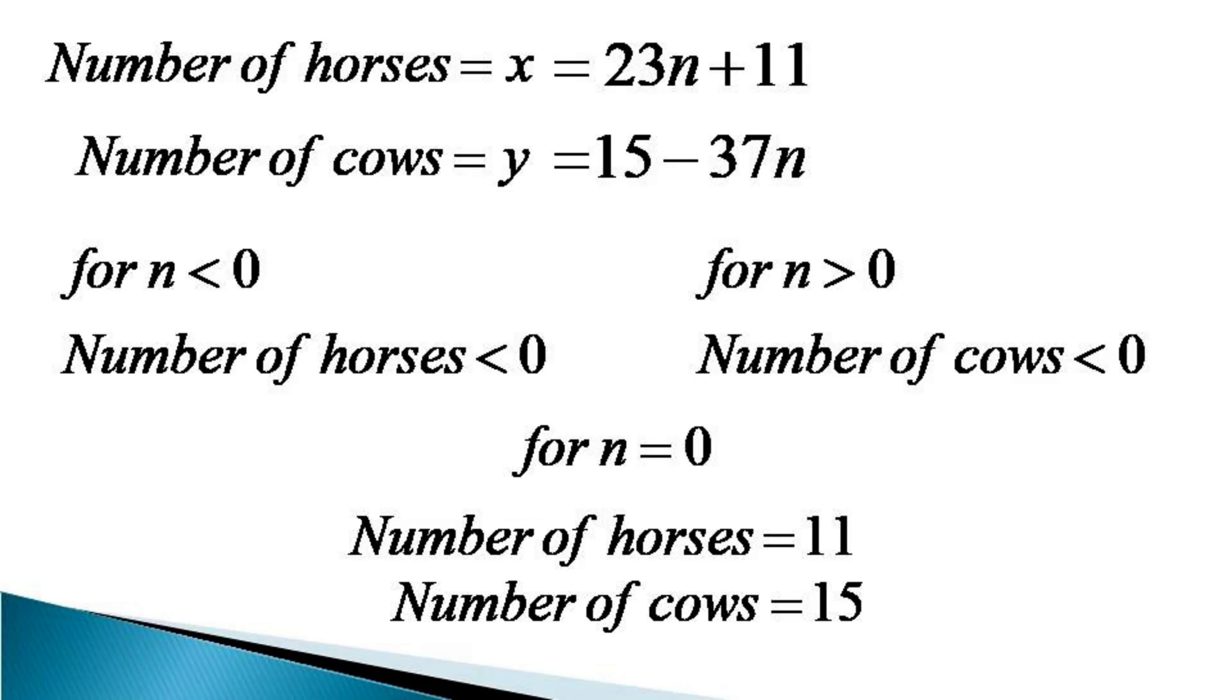So the farmer is lucky to have only one choice that he has to purchase 11 number of horses and 15 number of cows. So here is the solution of the given problem. Thanks for watching.